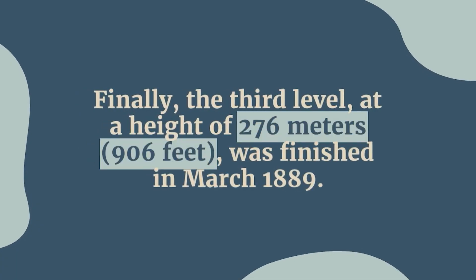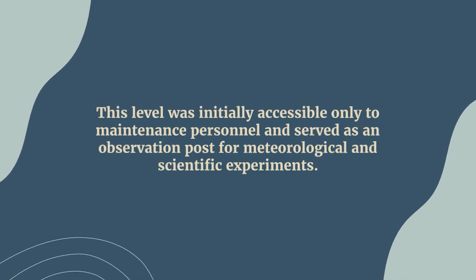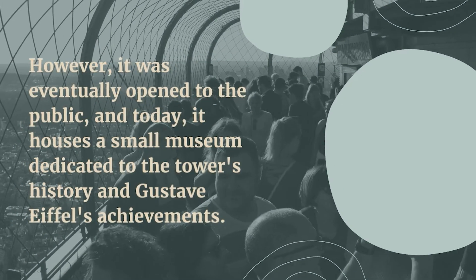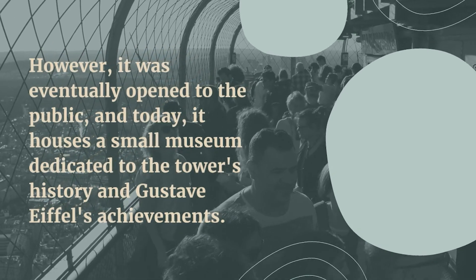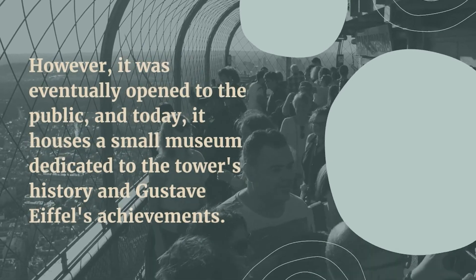Finally, the third level, at a height of 276 meters — 906 feet — was finished in March 1889. This level was initially accessible only to maintenance personnel and served as an observation post for meteorological and scientific experiments. However, it was eventually opened to the public, and today it houses a small museum dedicated to the tower's history and Gustave Eiffel's achievements.